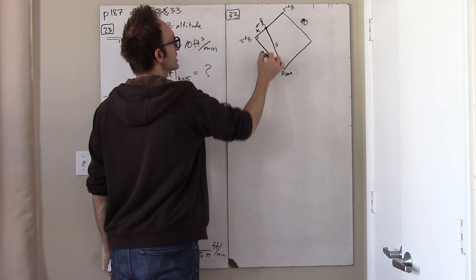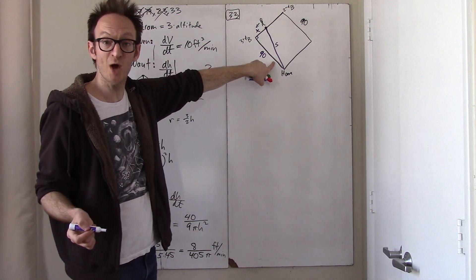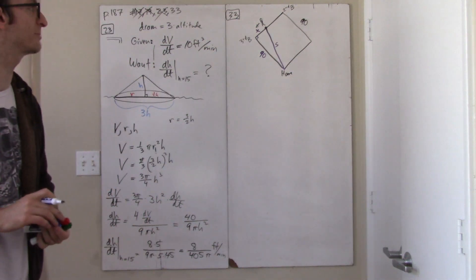The thing not to do is to assign a variable to this leg of the right triangle because it is not changing. It's a constant. It's 90. It's just the length of one side of the baseball diamond.